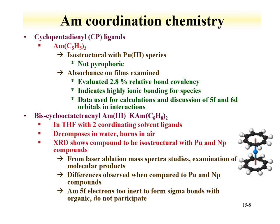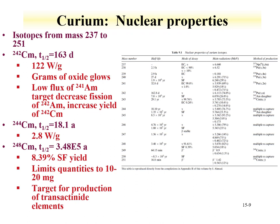We'll now turn our attention to curium. Curium has a number of isotopes from 237 to 251. Important curium isotopes for chemistry include curium-242, which is relatively short-lived at about half a year, with a high degree of heat per unit mass. Curium-244 is more widely available with a longer half-life of 18 years but less heat per unit mass. The longer-lived curium-248, with a half-life of 3×10⁵ years, is limited in quantity — on the order of 10 to 20 milligrams — and is used for target production for the formation of transuranic elements. Production routes generally involve multiple neutron capture from lighter targets.